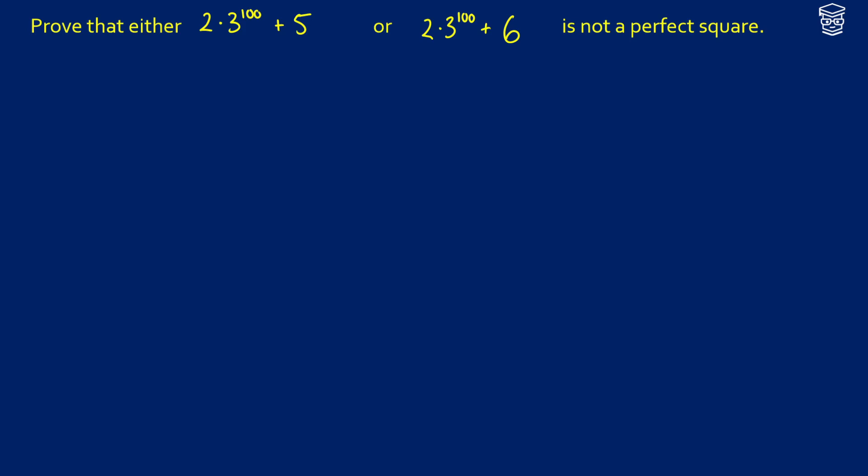If you don't remember what a perfect square is, this is when a number like 25 can be represented by common factors altogether. So 5 times 5, 36 would be 6 times 6, and so on.